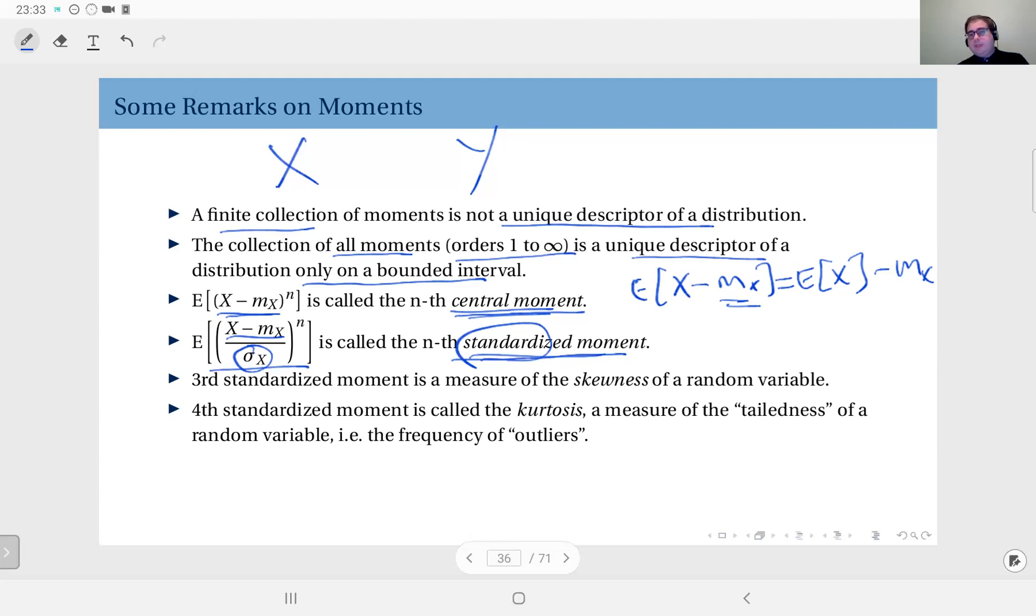And we talked about what they mean. The mean is sort of the center of mass and the variance is a measure of how far the outcomes can fall with respect to the mean. Those were the meanings of those statistics.